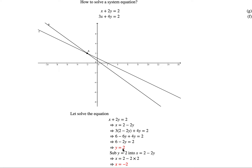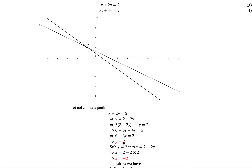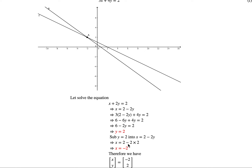So we get y equal to 2. Now that we have y, all we need is to substitute y equal to 2 back into x equal to 2 minus 2y. Substituting y equal to 2, we have x equal to 2 minus 2 multiplied by 2, which gives us x equal to minus 2.